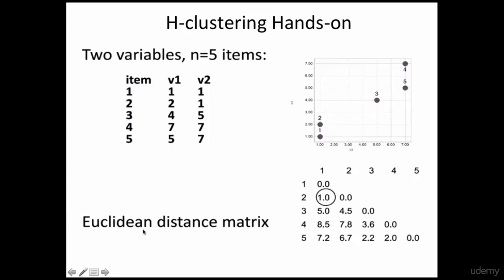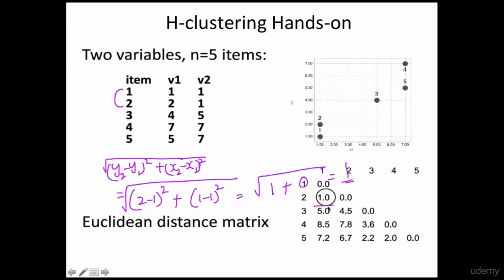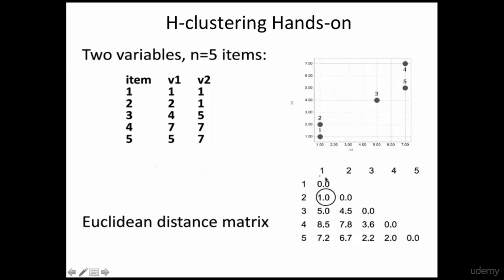Now we use Euclidean distance to calculate the distance between 1 and 2, 1 and 3, 1 and 4, 1 and 5. The formula is: square root of (y2 - y1)² + (x2 - x1)². For the distance between 1 and 2: (2-1)² + (1-1)² = 1 + 0, so the square root of 1 is 1. The distance between 1 and 2 is 1.